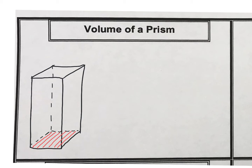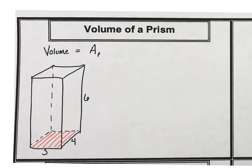The measurements that we're going to use are: this length is 3, this length is 4, and this length is 6. In general, the volume for any prism — we take the area of the base and we multiply that by the height of the prism.